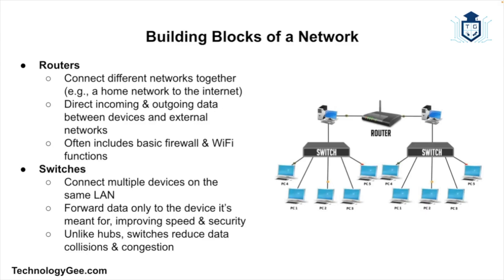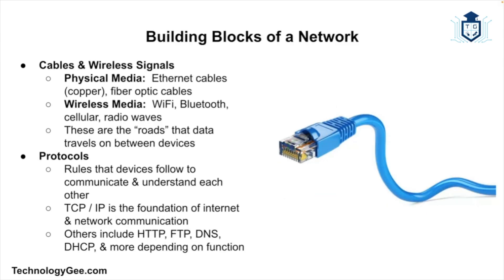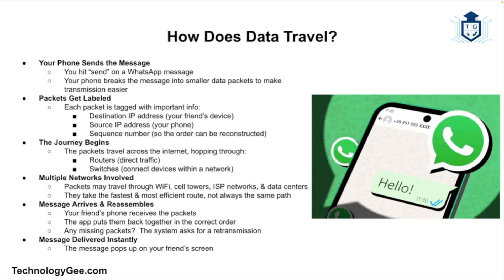Switches are like smart power strips — they connect multiple devices within the same LAN and ensure data is sent only to the intended device. You also have cables and wireless signals: data travels over Ethernet cables, fiber optics, or radio waves like Wi-Fi, Bluetooth, or cellular connections. And then you have protocols — the rules and languages that devices use to talk to each other. The most important one is TCP/IP, or Transmission Control Protocol / Internet Protocol.